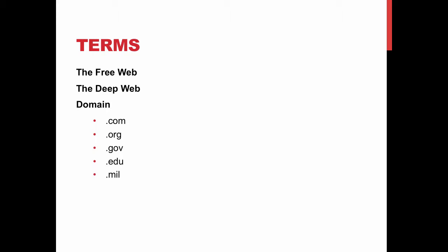.gov are government websites — only government organizations can have this domain, so it's always trustworthy. .edu is for educational websites and can only be used by higher education institutions. They are generally pretty trustworthy, though watch out for student personal webpages provided by their school. .mil is for military websites; it can only be used by the military, so it's always trustworthy.